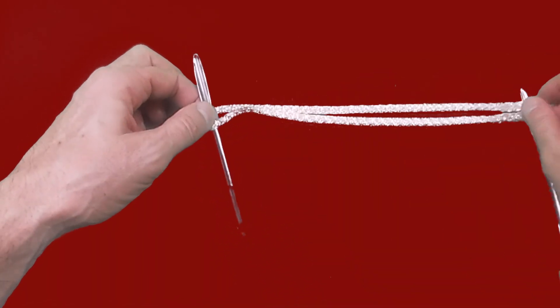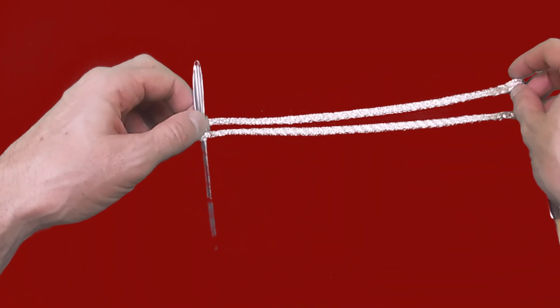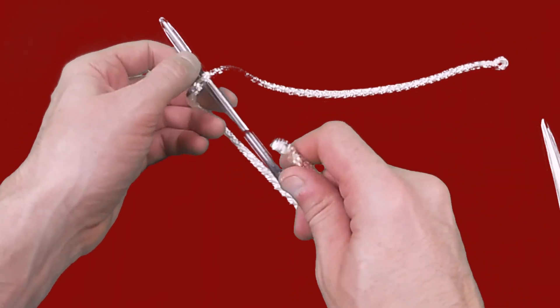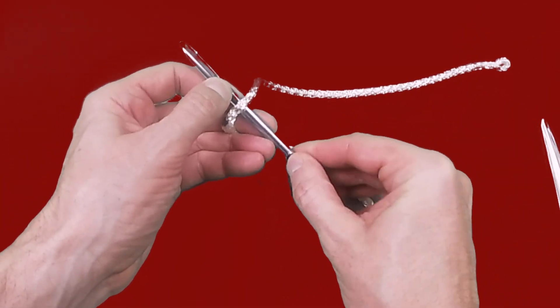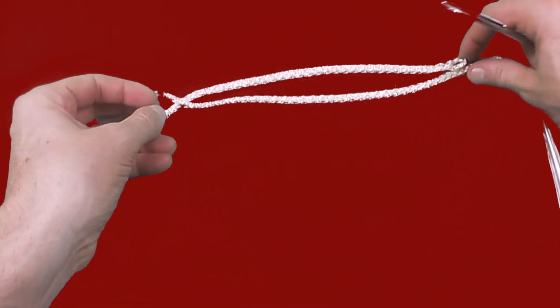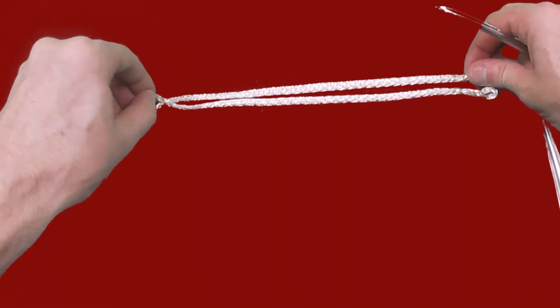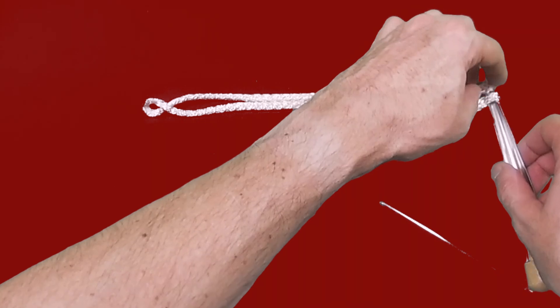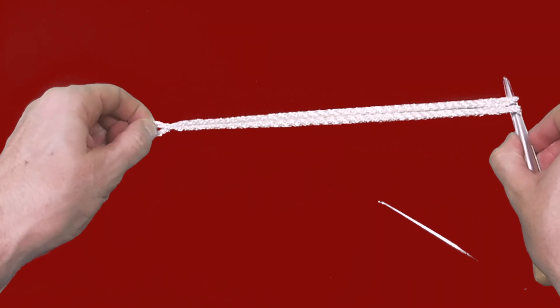Using our fid we take one of the Brummel splices and pull it through the line to create the locking loop. You then finish it off by putting the splicing pick through the two splices and normalizing the shackle by pulling it tight.